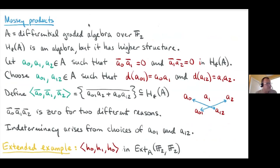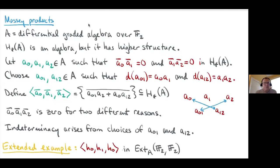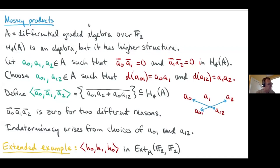Let's start with a general setup: a differential graded algebra over F_2. I'm working over F_2 so I don't have to deal with minus signs — in F_2, plus one equals minus one. When you take the homology of a DGA, the Leibniz rule guarantees that there's a well-defined ring structure on the homology. But it's not just an algebra — it also has higher structure in terms of Massey products.